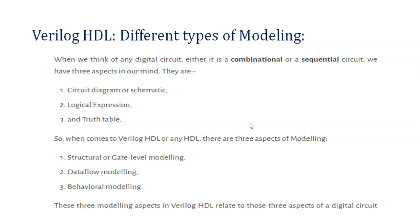When it comes to Verilog, that is HDL hardware description language, there are three aspects of modeling for how you write code in Verilog. First is structural or gate level, second is dataflow which is also called RTL, and third is behavioral modeling style. These three modeling aspects in Verilog relate to those three aspects of digital circuit — circuit diagram, logical expression, and truth table. For gate level modeling you should know the circuit diagram or schematic. For dataflow modeling you should know the equation, that is the logical expression. And for behavioral modeling style, you should know the functionality, that is the behavior or truth table of that circuit. According to that, you will prefer which modeling style to use.